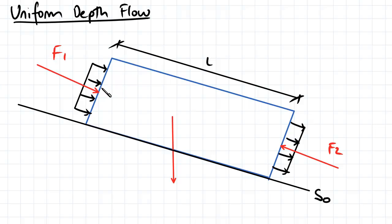Our volume of water here is going to have some weight. That weight is going to be W which is going to be equal to its unit weight multiplied by the cross-sectional area multiplied by the length.